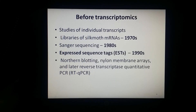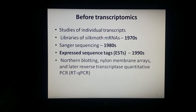ESTs came to prominence during the 1990s as an efficient method used to determine the gene content of an organism without sequencing the entire genome. During that time, other methods for quantification of individual transcripts — such as northern blotting, nylon membrane arrays, and later reverse transcriptase quantitative PCR — were also popular, but these methods were laborious and could only capture a tiny subsection of the transcriptome. As a result, the transcriptome as a whole wasn't fully expressed until high-throughput technologies were developed.